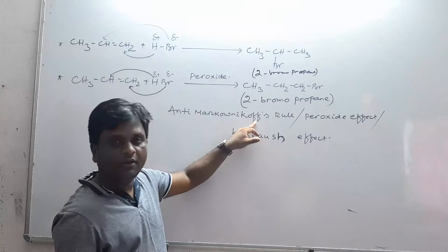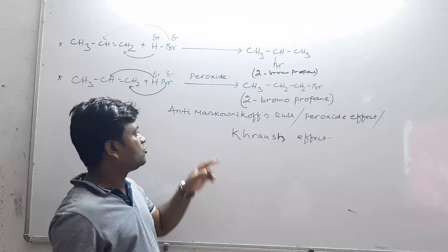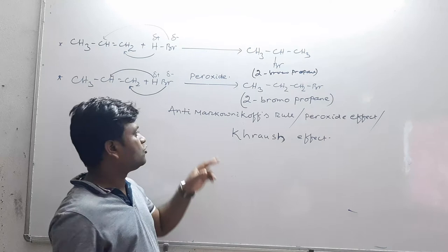Why? Markovnikov rule. So it is called anti-Markovnikov addition since it is carried out in the presence of peroxide. It is known as peroxide effect.